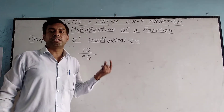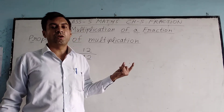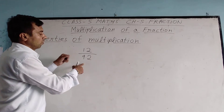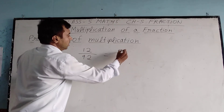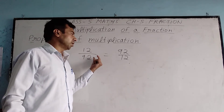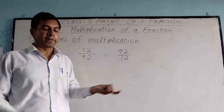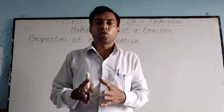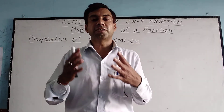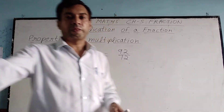When we interchange the numerator and denominator of a fraction, it is called the reciprocal or multiplicative inverse of that fraction. For example, the multiplicative inverse of 12 by 92 is 92 by 12. Since 12 by 92 was a proper fraction, its reciprocal 92 by 12 is an improper fraction. Always remember: the reciprocal of a proper fraction is an improper fraction, and the reciprocal of an improper fraction is a proper fraction.